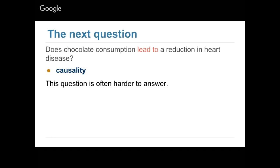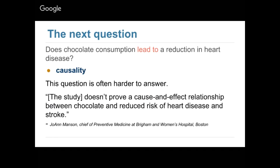That leads to our next, more important question: does chocolate consumption actually cause a reduction in heart disease? Does eating chocolate cause you to get less heart disease? That question is not about association but about causality, and it's pretty hard to answer. Association refers to just a difference between your study participants; causality refers to whether your treatment actually caused your outcome, or whether something else was involved.